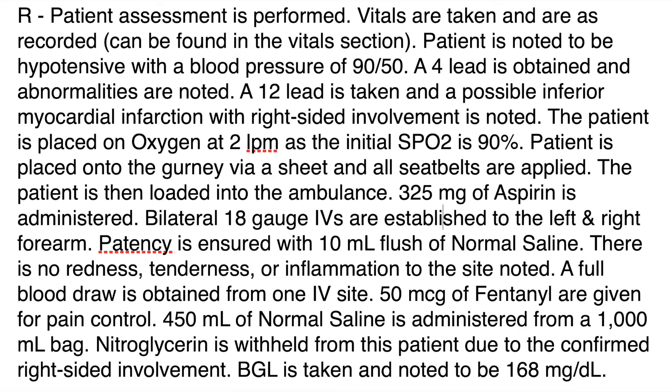325 milligrams of aspirin are administered for chest pain. Bilateral 18-gauge IVs are established to the left and right forearm, patency confirmed with a 10 mL flush of normal saline with no redness, tenderness, or inflammation at the sites. 50 micrograms of fentanyl are given for pain control. 450 milliliters of normal saline are administered from a 1,000 mL bag. Nitroglycerin is withheld due to confirmed right-sided involvement — per protocol, nitroglycerin is completely contraindicated on an inferior MI with right-sided involvement. Blood glucose is noted at 168.